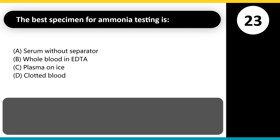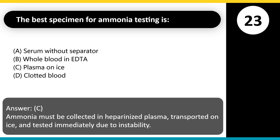The best specimen for ammonia testing is: A. Serum without separator. B. Whole blood in EDTA. C. Plasma on ice. D. Clotted blood. Answer: C. Ammonia must be collected in heparinized plasma, transported on ice, and tested immediately due to instability.